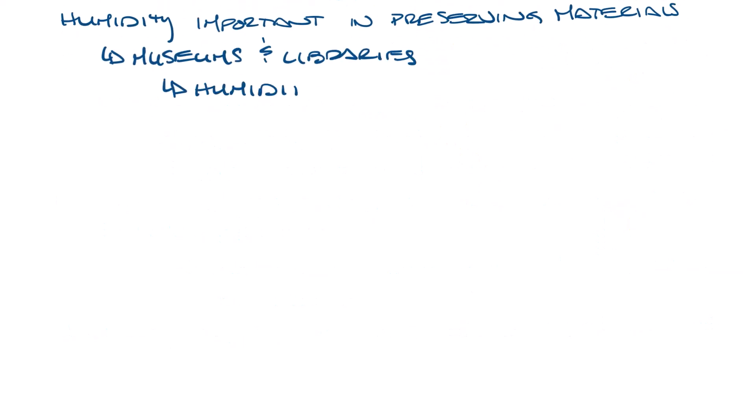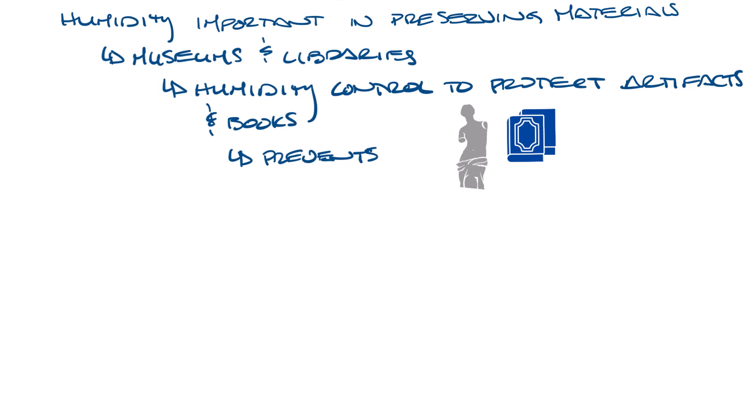Museums and libraries rely on humidity control to protect valuable materials like artifacts and books. Humidity prevents drying, cracking, and degradation of sensitive documents and objects.